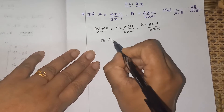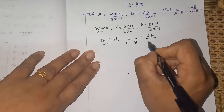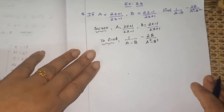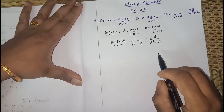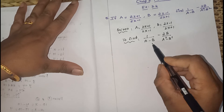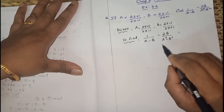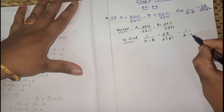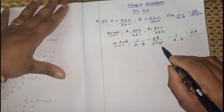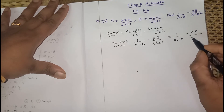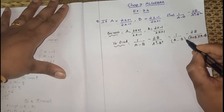To find: 1/(A-B) minus 2B/(A²-B²). I am going to simplify this. Look at the denominators: we have A-B and A²-B². Now A²-B² can be written as (A+B)(A-B) using the identity. So here A-B is already present.